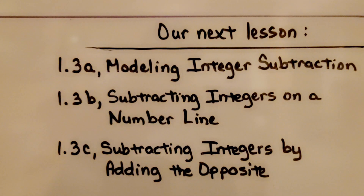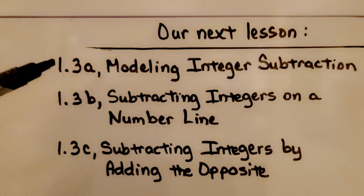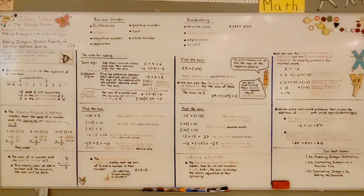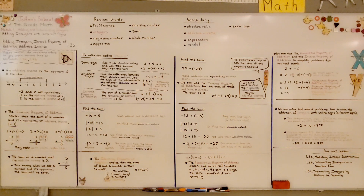Now we're moving on to Lesson 1.3, and the first part of that lesson is modeling integer subtraction. Remember, when there are different signs, find the difference between the addends' absolute values, then use the sign of the addend with the greater absolute value for the sum. I hope you have a wonderful day, and join me for the next lesson. Bye!